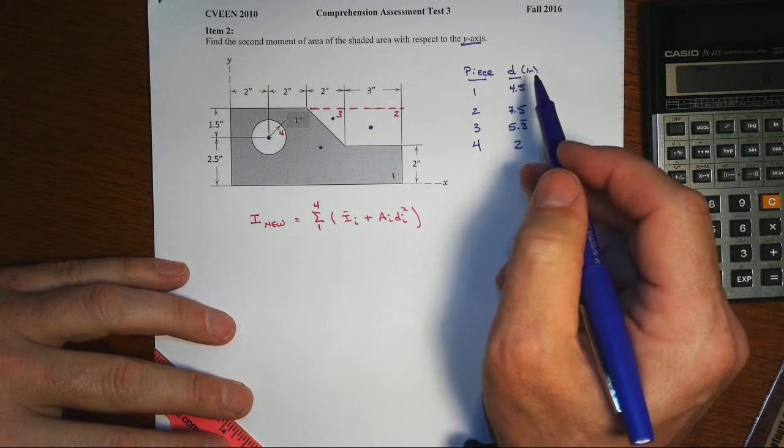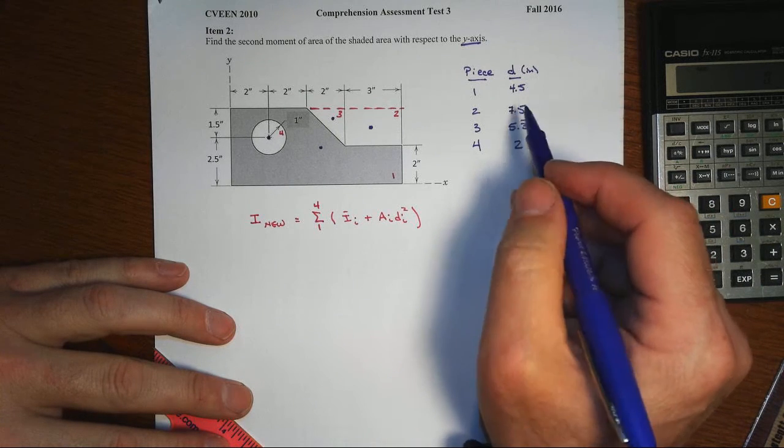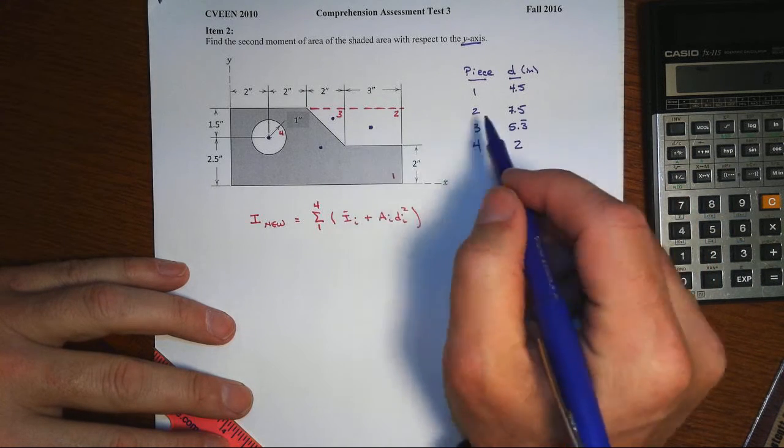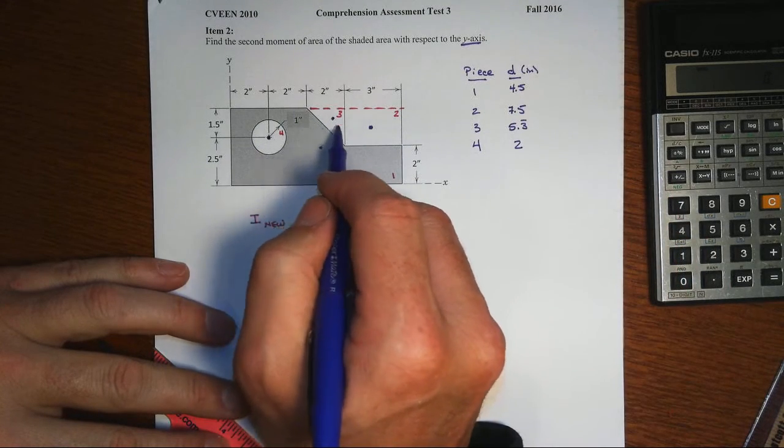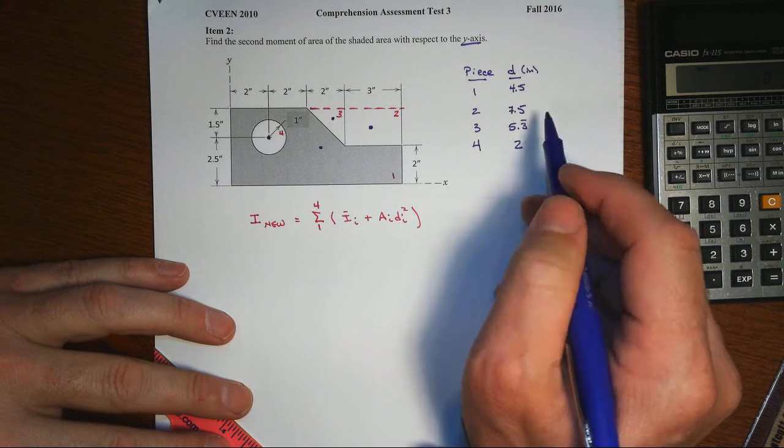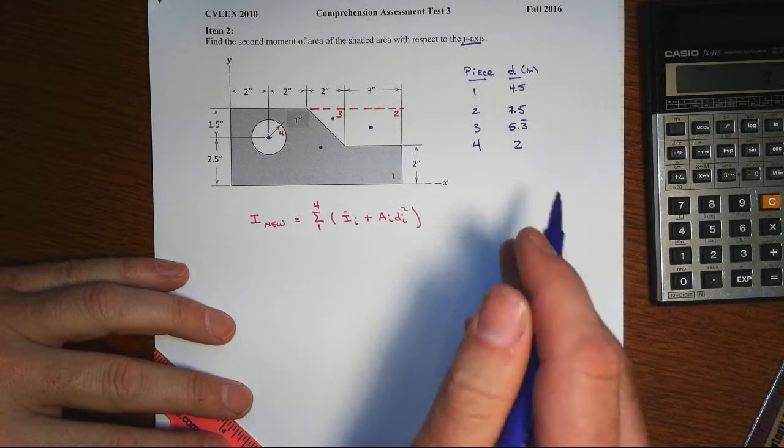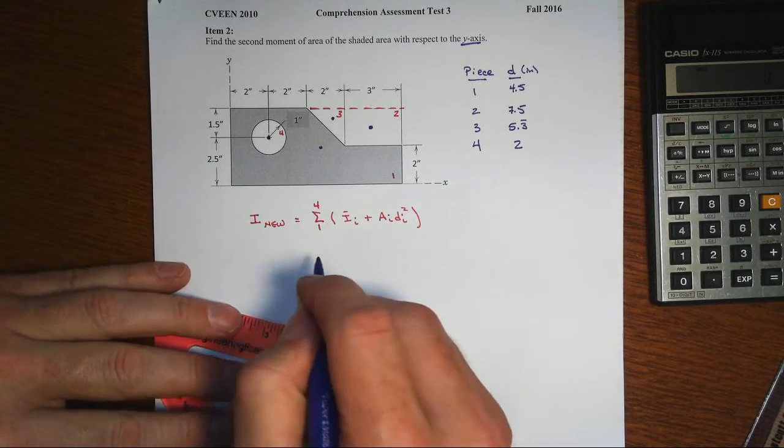And the centroidal distances from the y-axis, then for each one of these shapes, the big one is 4.5, this little 2 by 3 rectangle is 7.5, shape number 3, the triangle, is 5 and 1/3, and then the circle has a 2 inch distance away from the y-axis of interest.